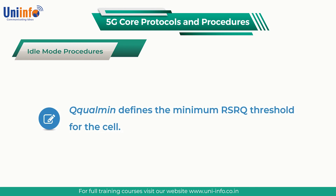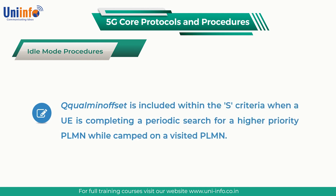A high value of Q Quality Minimum will restrict the coverage area, whereas a low value may lead to failed connection setup attempts. Q Quality Minimum is optional within SIB1, so it is not mandatory to use an RSRQ threshold during cell selection. The UE assumes a value of negative infinity for Q Quality Minimum if it is excluded from SIB1, ensuring that the UE always passes the quality part of the S criteria. Q Quality Minimum Offset is included within the S criteria when a UE is completing a periodic search for a higher priority PLMN while camped on a visited PLMN. Its value is always positive, making the cell selection criteria more stringent, with the objective of helping to reduce the potential for ping-pong.